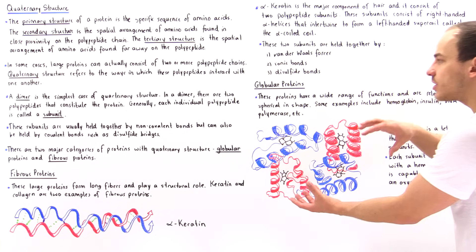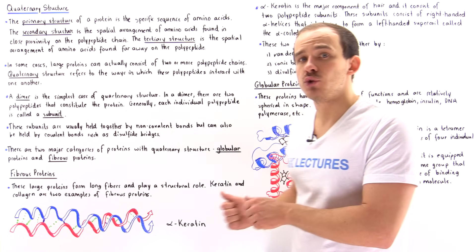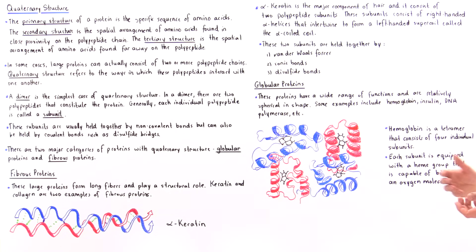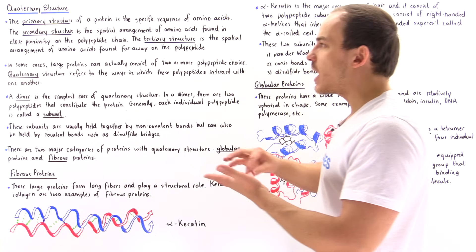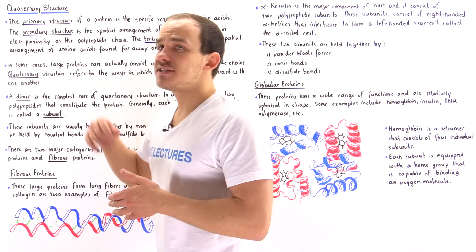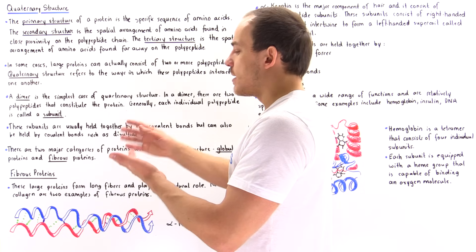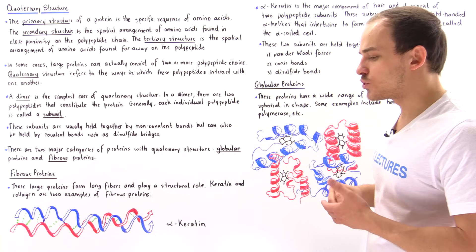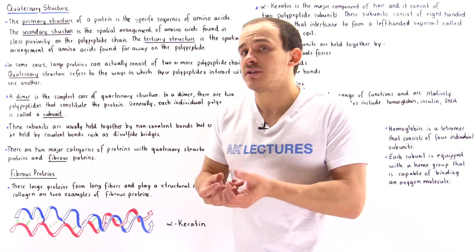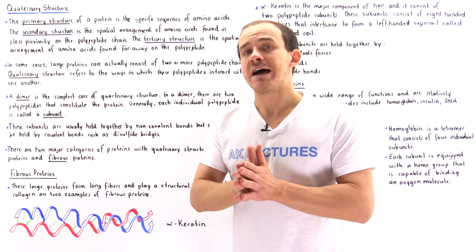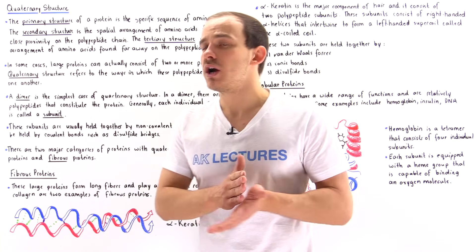Slight changes to the quaternary structure of hemoglobin can actually increase or decrease the affinity of the hemoglobin molecule for oxygen, as we'll see when we discuss hemoglobin in more detail. To summarize, there are four levels of protein structure: primary structure is the sequence of amino acids; secondary structure consists of regular patterns — alpha helixes, beta sheets, beta turns, and omega loops; tertiary structure involves interactions between amino acids far apart on the chain; and finally, quaternary structure is present in proteins that consist of two or more polypeptide chains.